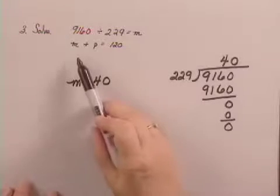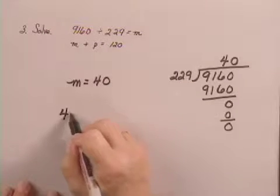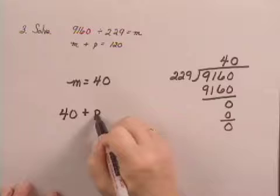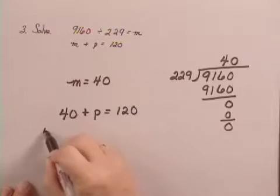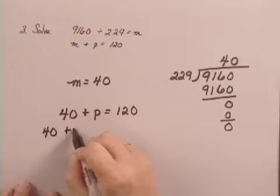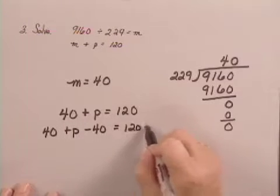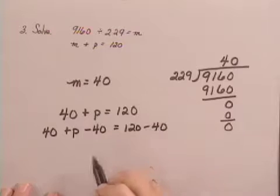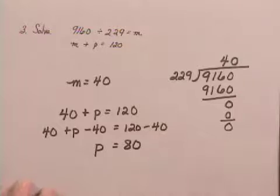In the second equation, we can substitute now 40 for M. So we have 40 plus P equals 120. Subtracting 40 from both sides, we have P equals 80. And so we have solved for both M and for P.